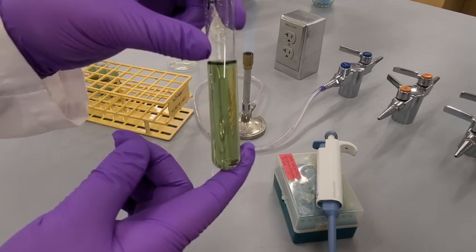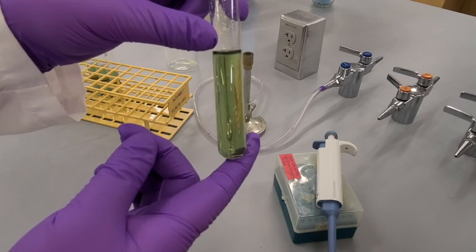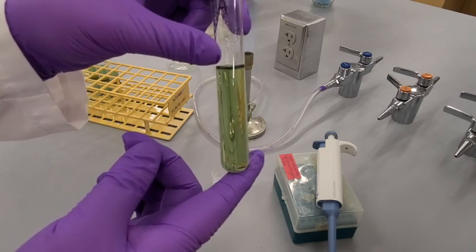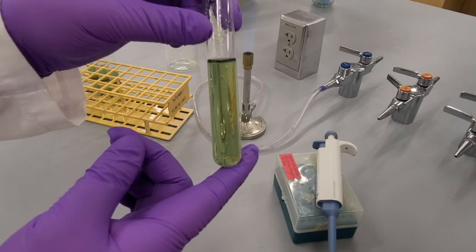It contains a pH indicator called bromocresol green that when the pH is lowered will turn yellow and when it's increased it will turn blue.